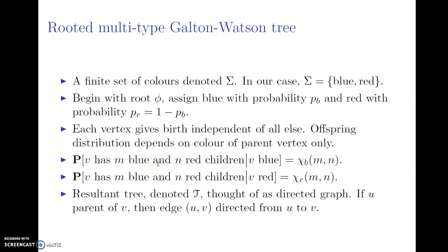What are multi-type Galton-Watson trees? We know what Galton-Watson branching processes are. In the case of multi-type Galton-Watson trees, we have a given finite set of colors. For the sake of this talk, I'm just going to focus on the case where you have two colors: blue and red. The root phi is assigned blue with probability p sub v and red with probability p sub r, which is 1 minus p sub v.